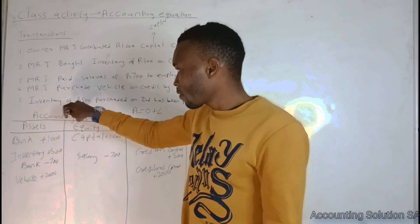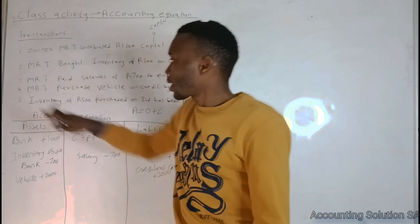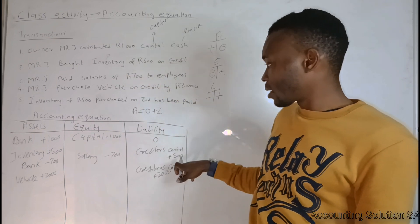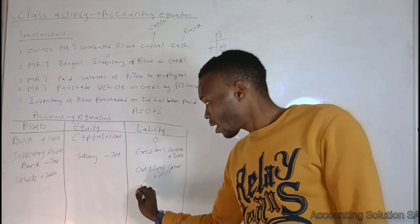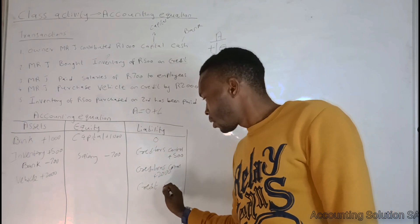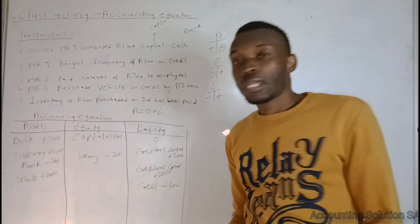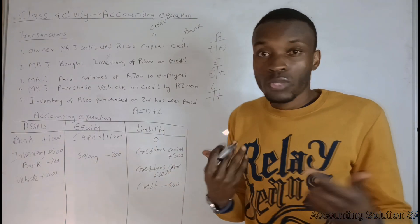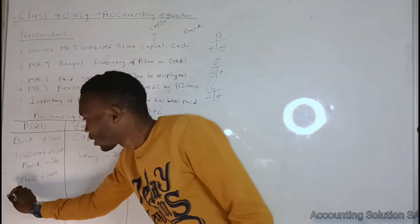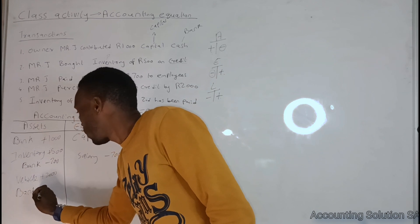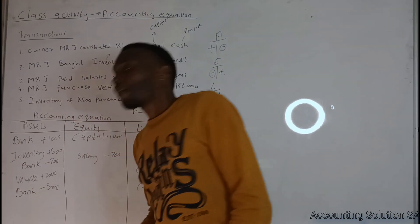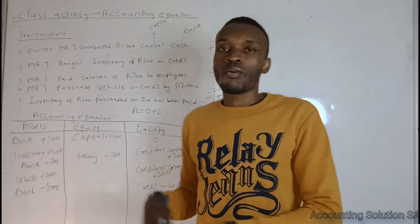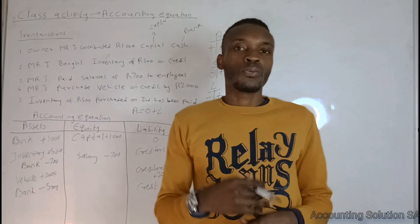Transaction five: the inventory of 500 purchased on credit on the second date has now been paid. We owe 500, and because we paid, the liability is reduced — creditors control gets minus 500. We pay through the bank, so bank gets minus 500 as well. This is how you prepare your accounting equation.